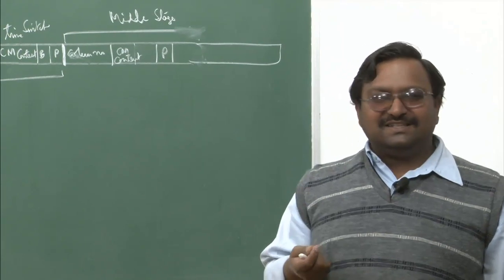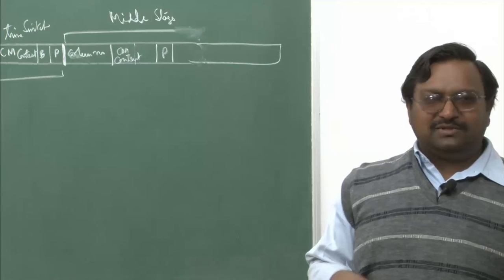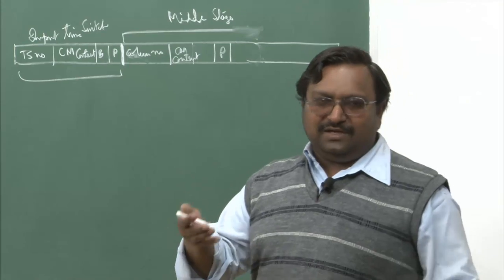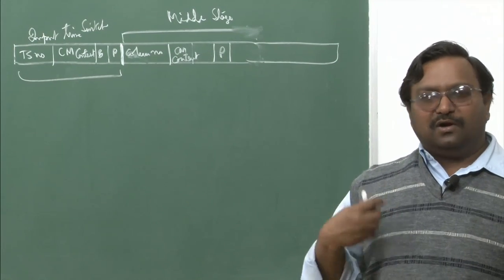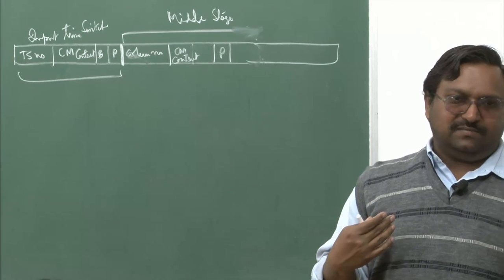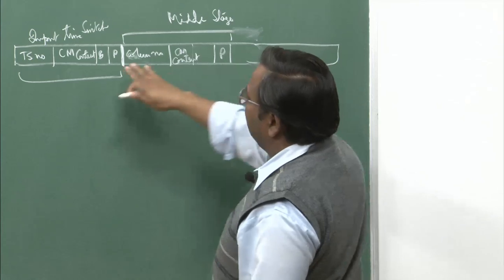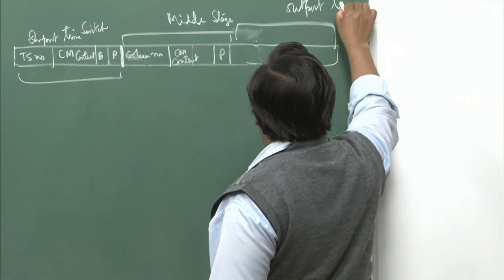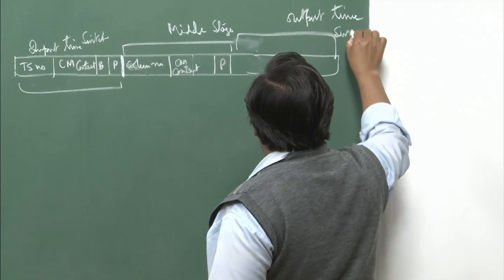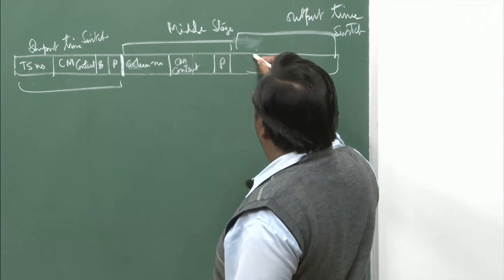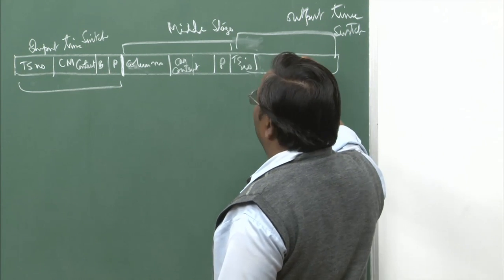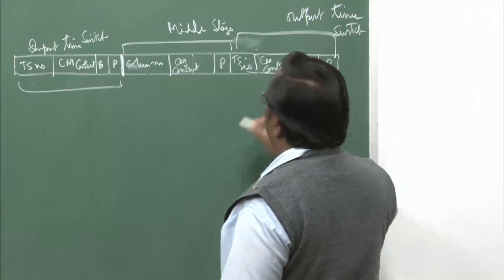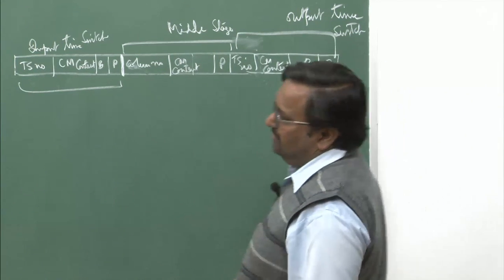When you are going to release a channel, do not worry about writing into the control memory — just simply set the value to free. You can maintain a local data structure and keep that value, or keep on fetching it from the switch. Then there is something similar again for the output time switch: TS number, CM content, a busy bit, and a parity bit — similar formula, because the control memories are there again.